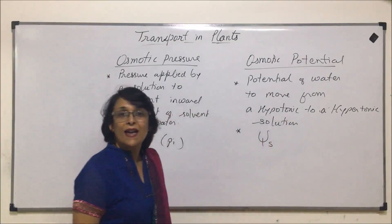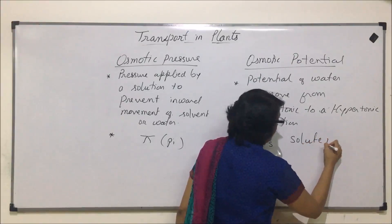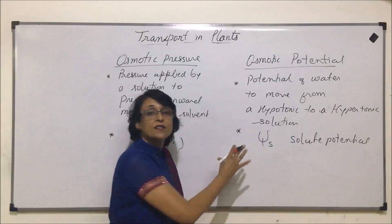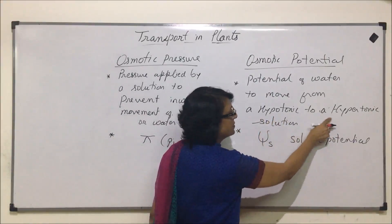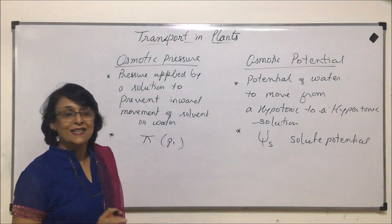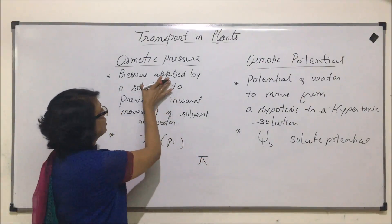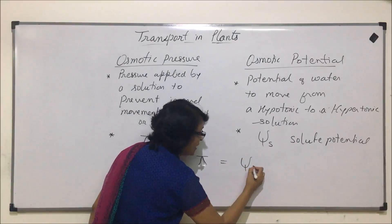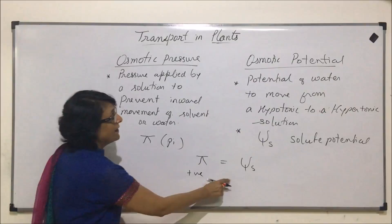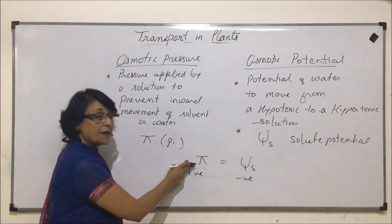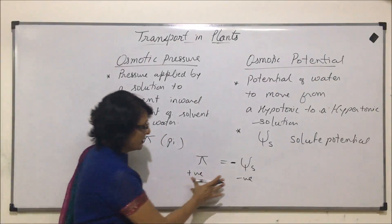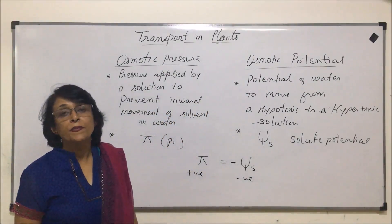Osmotic potential is represented as Ψs, that is solute potential. Osmotic potential is also referred to as solute potential because it is in reference to tonicity, that is concentration — from less concentration to more concentration. Now if we compare these two, their values are the same. Osmotic pressure is always written as positive, whereas osmotic potential is always negative. So pi is equal to the negative of solute potential or osmotic potential. Both terms are in reference to the solution.